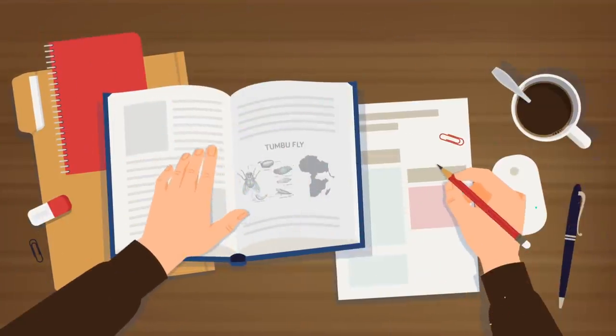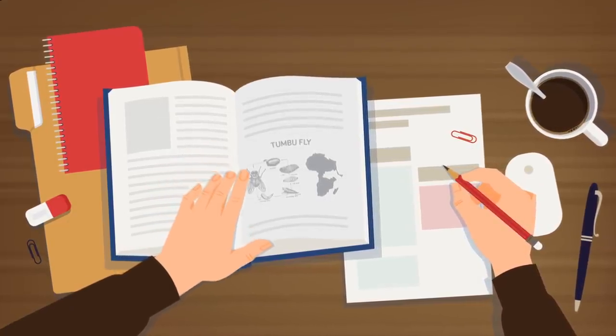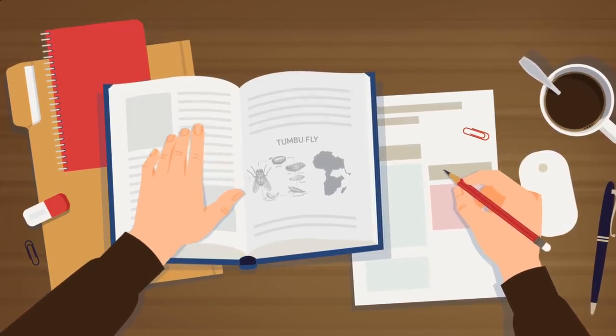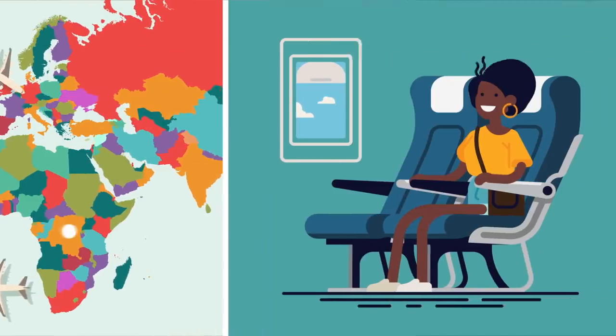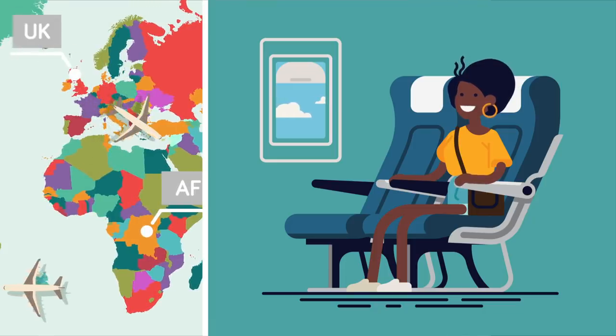Much worse is the tumbu fly, and this should really only be an annoyance to people who live in the tropical regions of Africa. These things might lay their eggs on damp clothes and find their way into humans from there. We found a story of a British woman who'd been working in Africa, and when she got home, she started to get a painful itch.